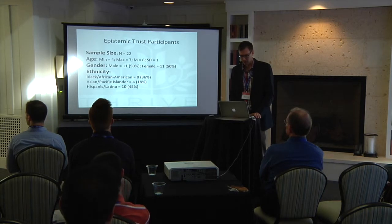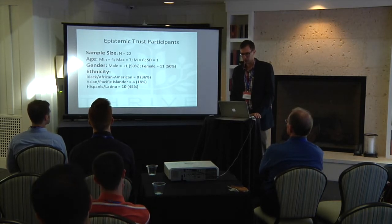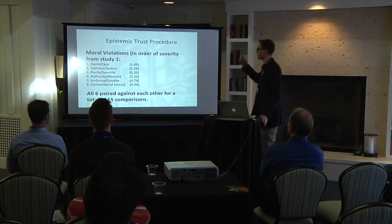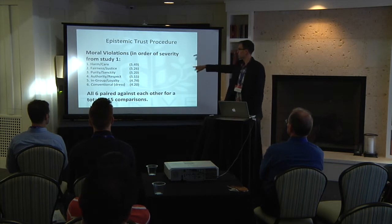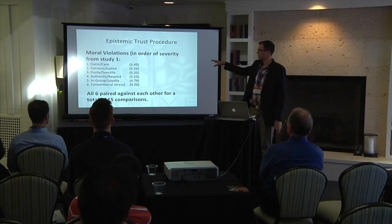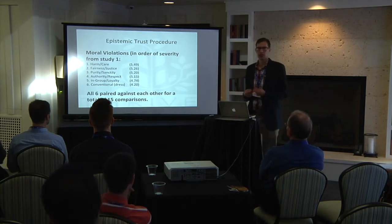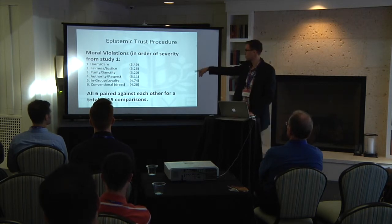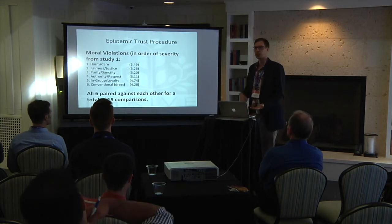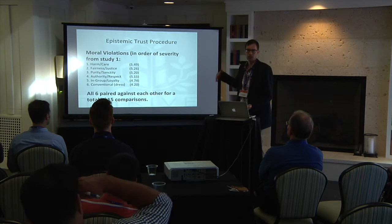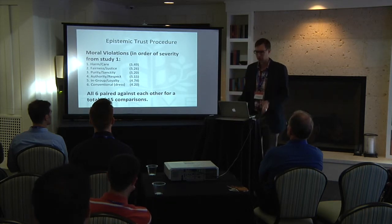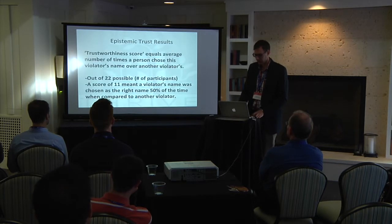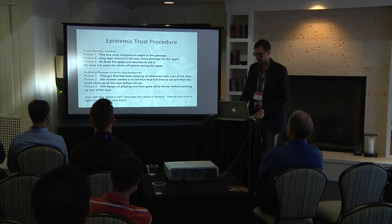Different sample — 22 kids from local schools in the Pasadena area. As a review, here are the different violations found from Study 1, listed in order. What we did is give children in the second study 15 total pairs, which accounted for all of these different comparisons. We read the harm/care violation and compared it against the justice/fairness one, and so on, until all of the violators were compared with each other. I've left this rank order in the next slides so you can see the comparison of how they came out.